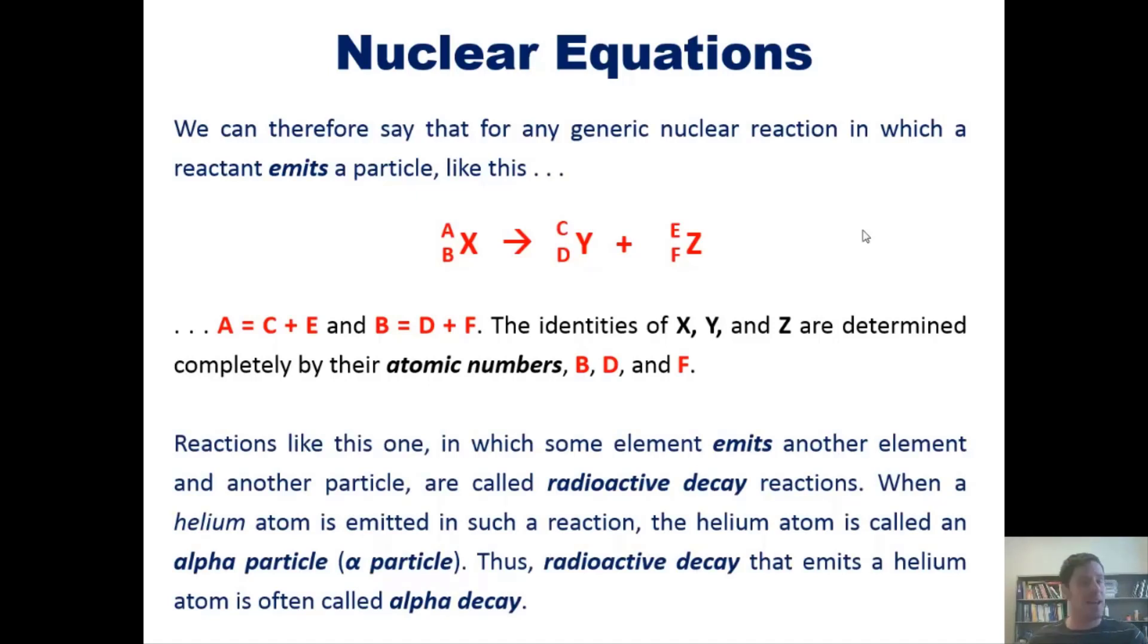Reactions like this one, in which some element emits another element and a particle, are called radioactive decay reactions. When a helium atom is emitted, it's called an alpha particle, and this process is called alpha decay.